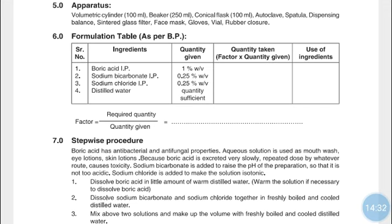Procedure: first, dissolve Boric Acid in a small amount of warm water — warming the solution increases the solubility of Boric Acid. In a second beaker, dissolve the required quantities of Sodium Bicarbonate and Sodium Chloride together in freshly boiled and cooled distilled water. Then mix both solutions together and make up the volume with freshly boiled and cooled distilled water.